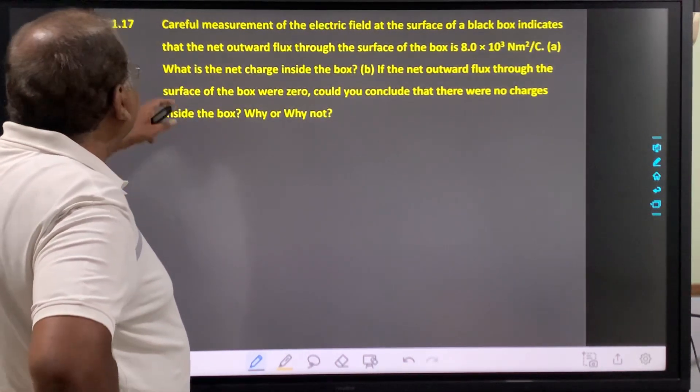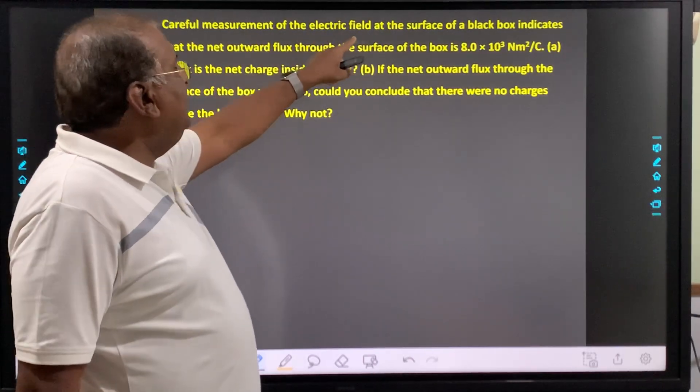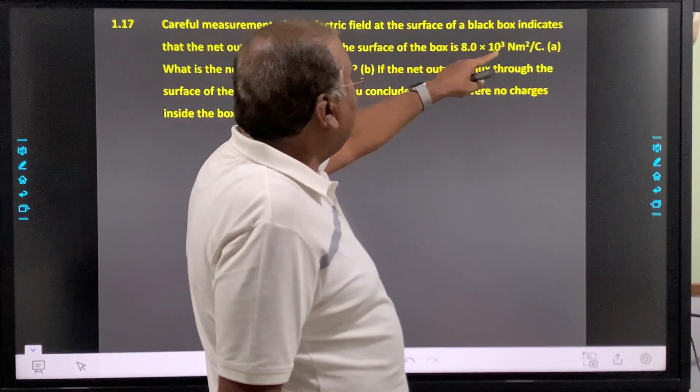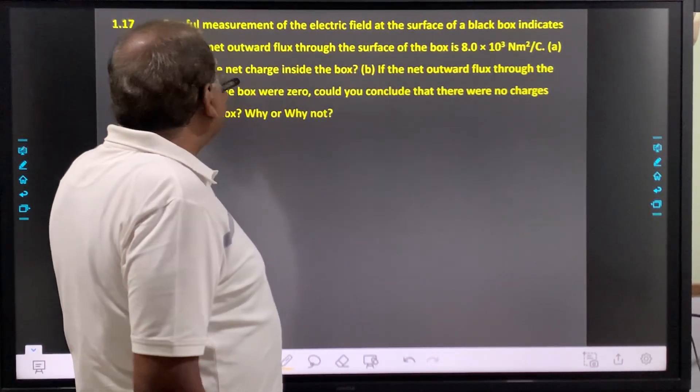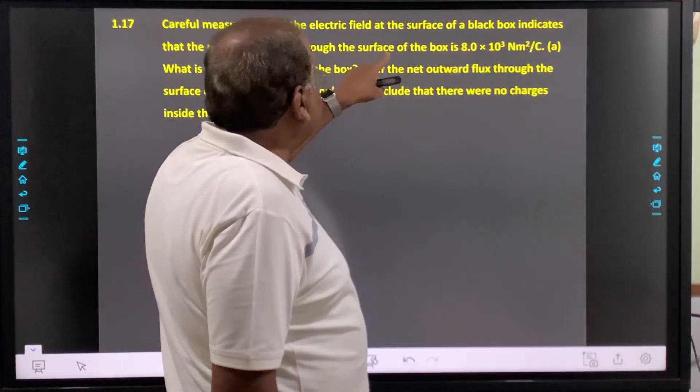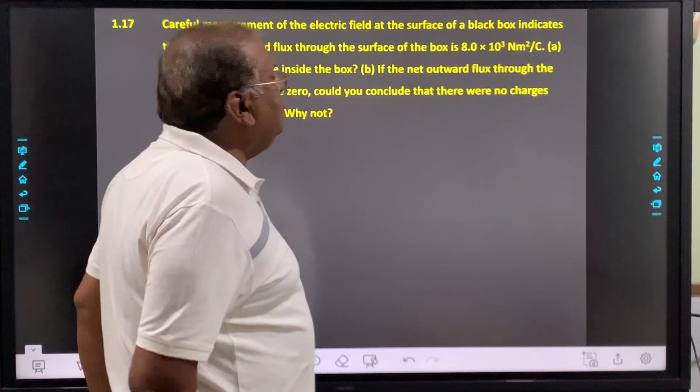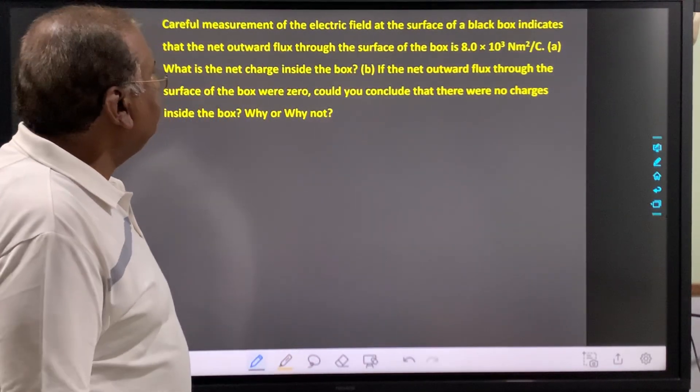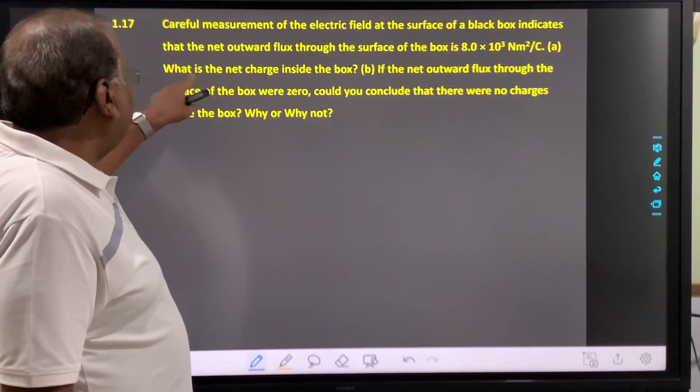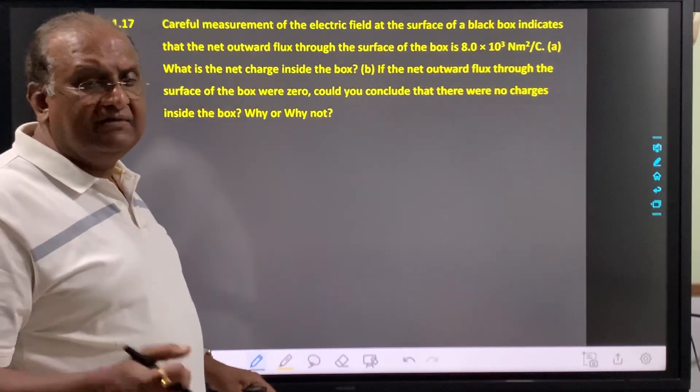Now 1.17. Careful measurement of the electric field at the surface of a black box indicates that the net outward flux through the surface of the box is 8 × 10³ newton meter square per coulomb. Question A: What is the net charge inside the box?